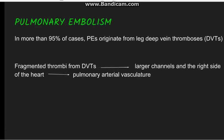Now going to pulmonary embolism. Pulmonary embolism originates mostly from deep vein thrombosis, and this is mostly present in the lower limbs. The thrombi get detached, form emboli, enter into the larger channels, into the inferior vena cava, then into the right side of the heart, and from there enter into the pulmonary arterial vasculature.